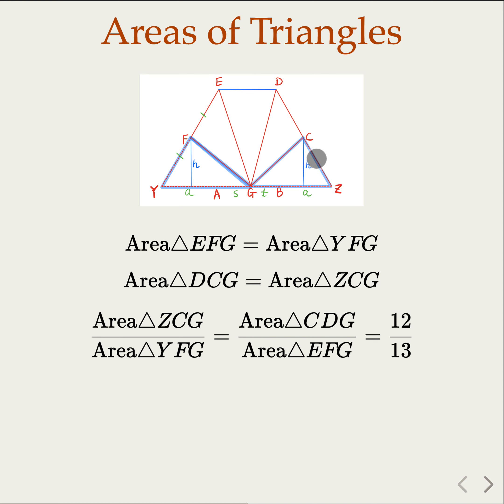Yeah. ZCG and the YFG. YFG. So these two triangles have the ratio of 12 over 13. Notice, however, the height is going to be identical here. H, H.